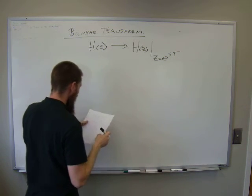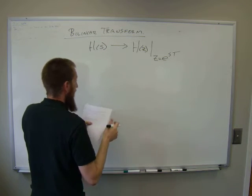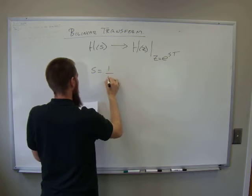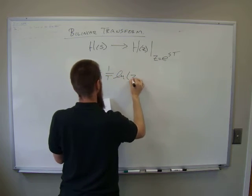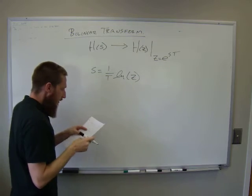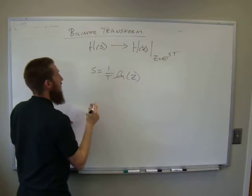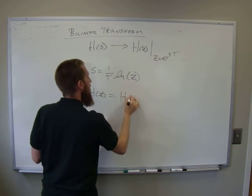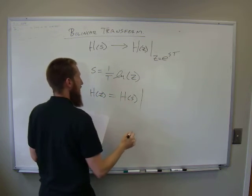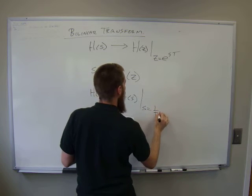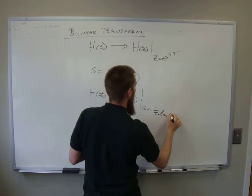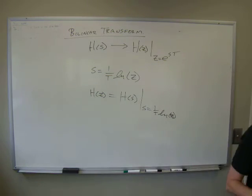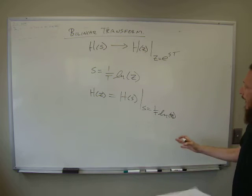Looking at this, we can also say that S is equal to one divided by T, the natural log of Z. So we can turn this around backwards and say that H of Z is going to be equal to H of S, where you substitute in S equal to one divided by T times the natural log of Z. However, this is a horrible chunk of math to do.